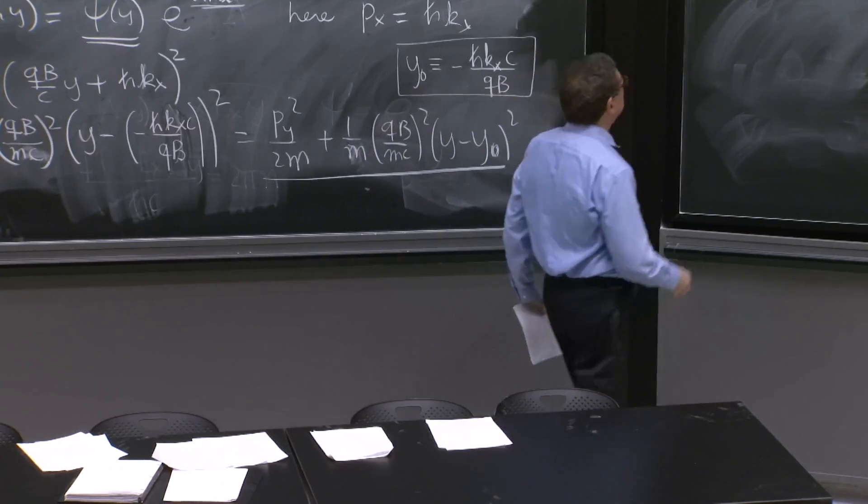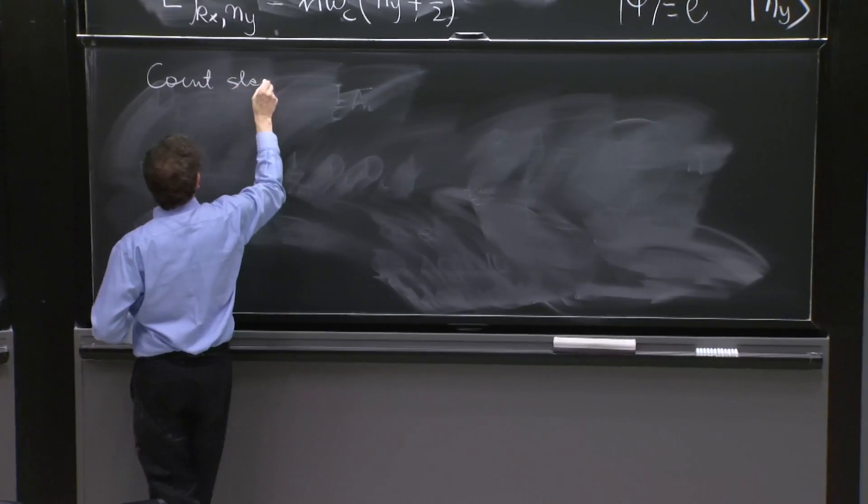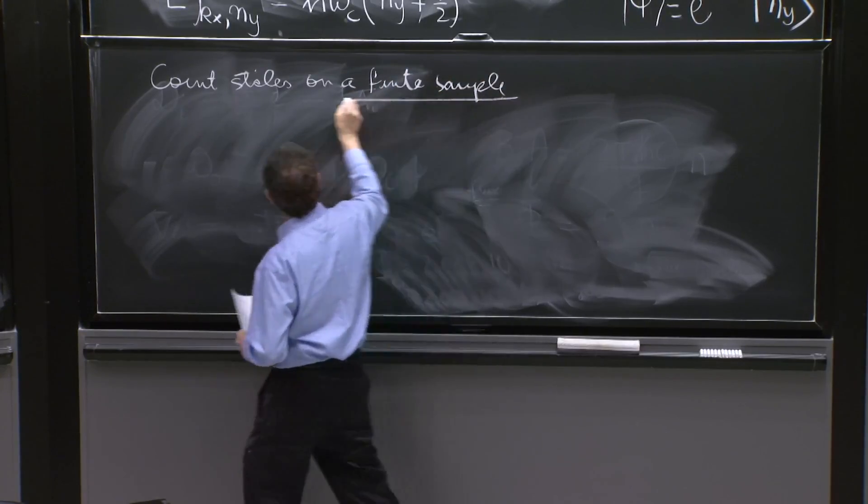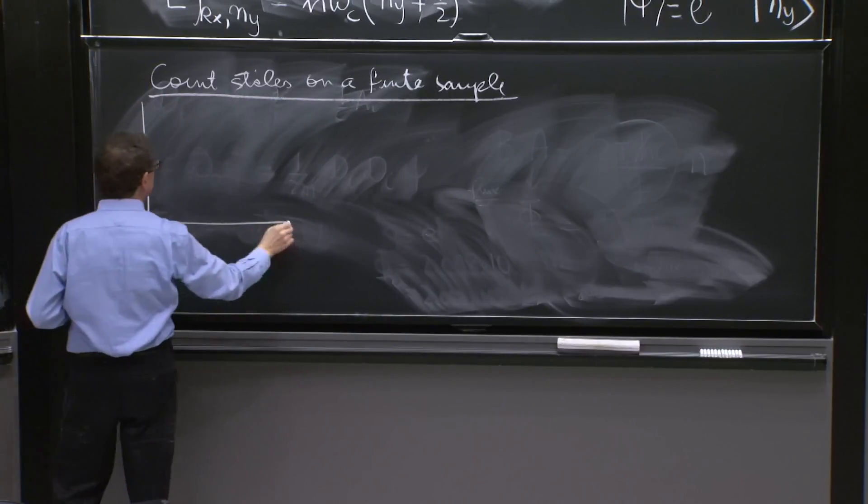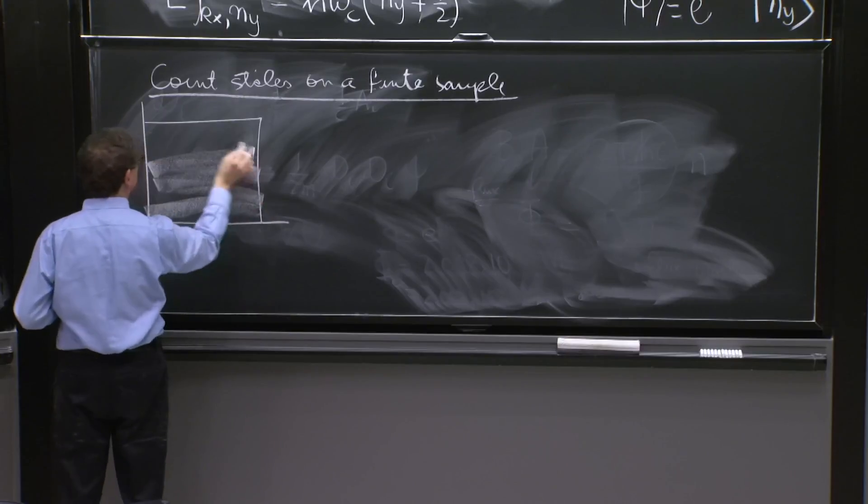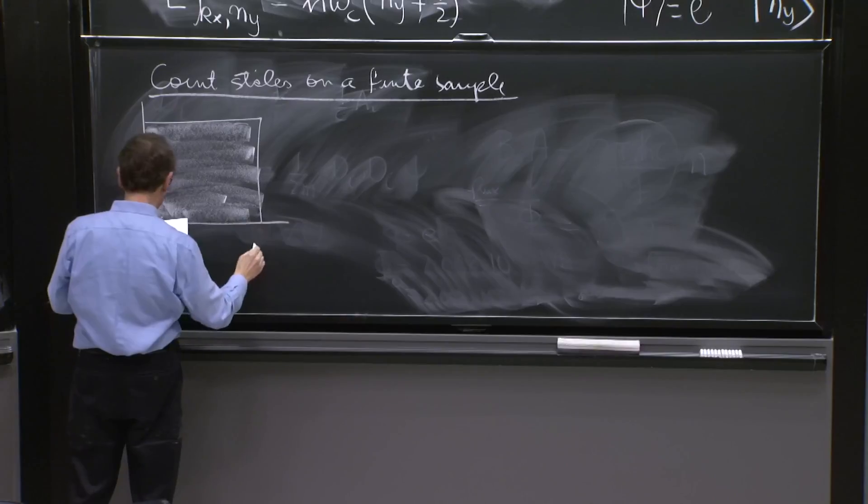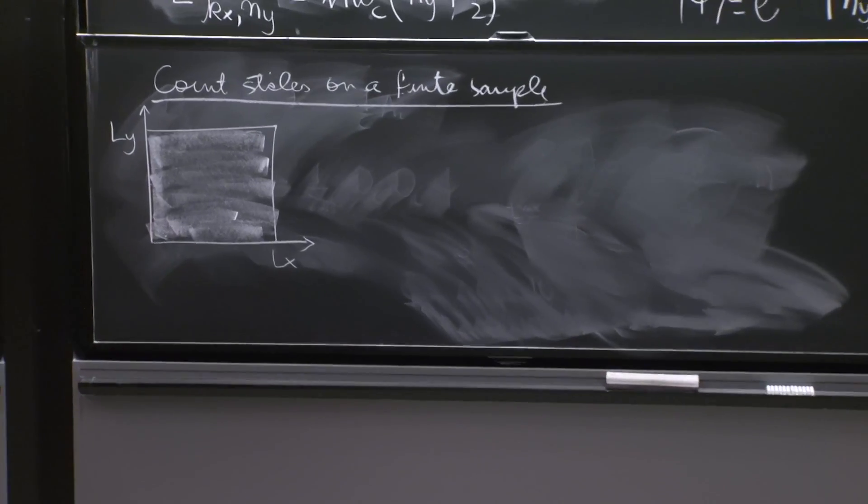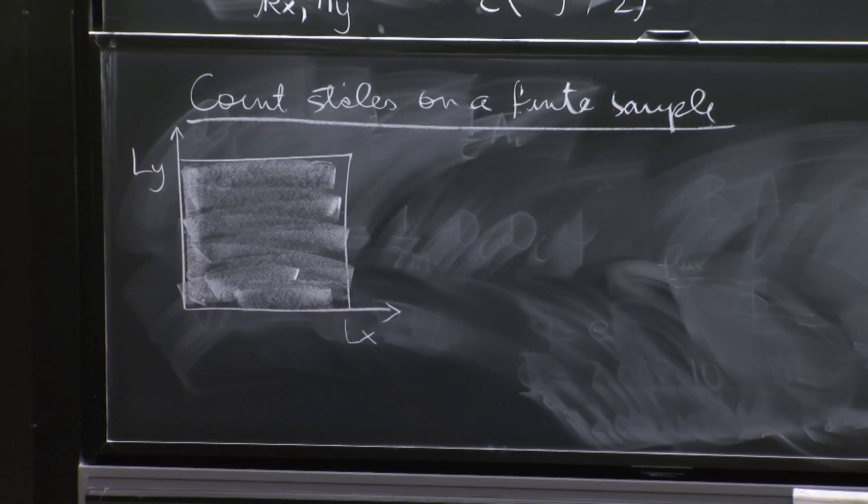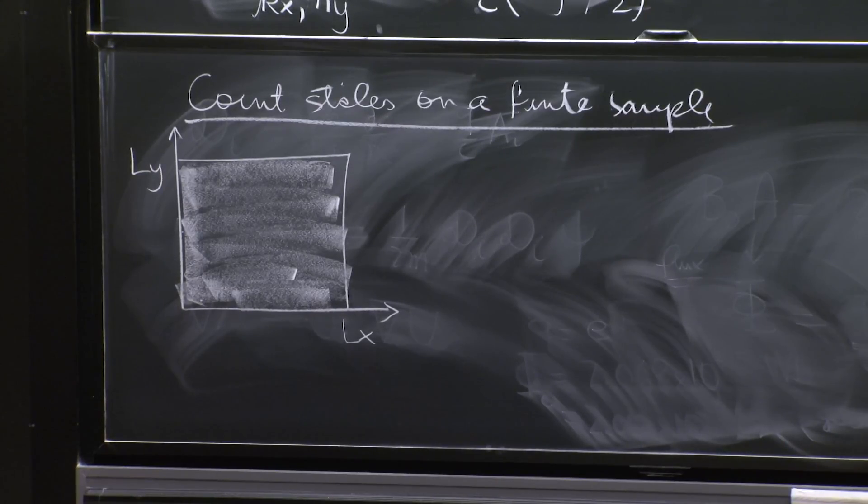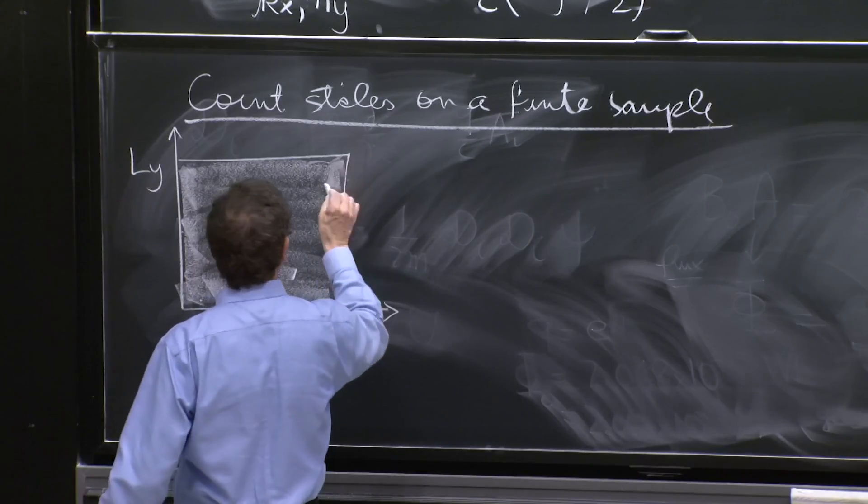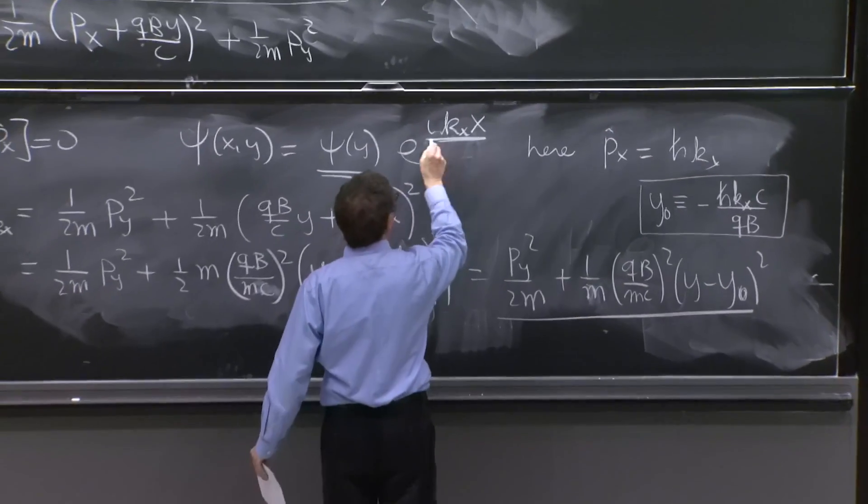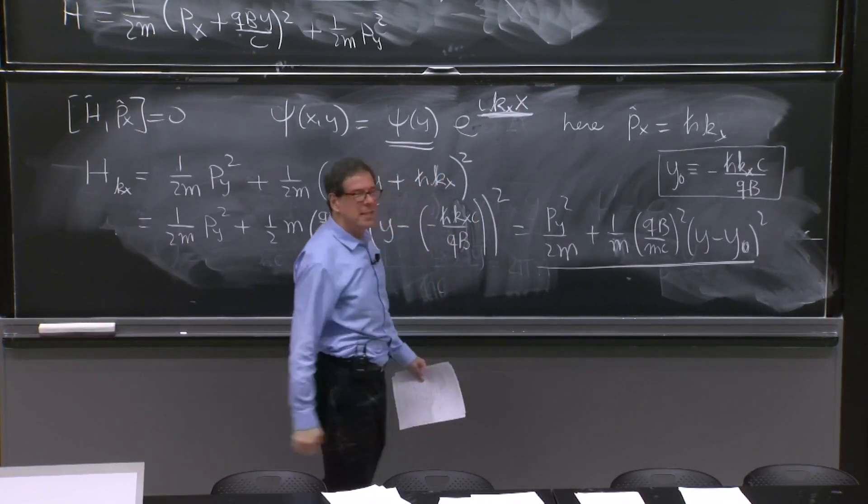OK. So let's count states in a finite sample. So same picture, but now the material is here. And we'll put L_x and L_y here. So finite size in L_x, finite size in L_y. So given our intuition with quantization, this suggests that we impose periodic boundary conditions in x and try to quantize the k_x here.